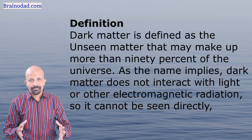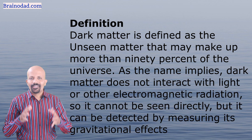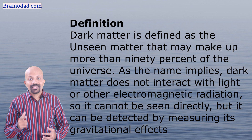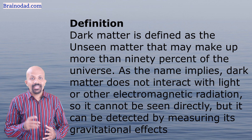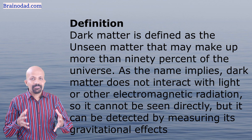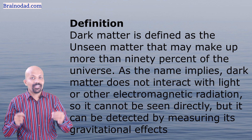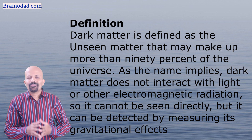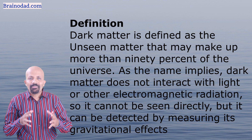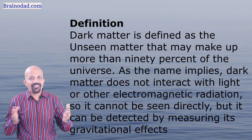So far we have seen the four steps of this technique. We will now see how to use this method for learning a difficult concept, with an example. Imagine that our topic of study is dark matter. Dark matter is defined as the unseen matter that may make up more than 90% of the universe. As the name says, dark matter does not interact with light or other electromagnetic radiation, so it cannot be seen directly, but it can be detected by measuring its gravitational effects.